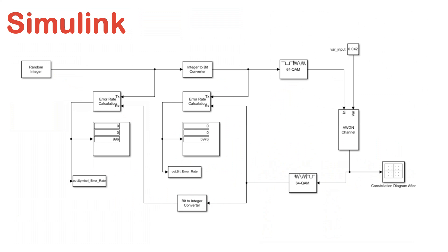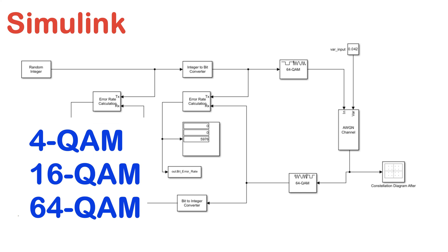Next, we modulate the bits using the QAM modulator block. QAM modulation involves encoding multiple bits into a single symbol. We can use different orders of QAM, such as 4-QAM, 16-QAM, or 64-QAM. The choice of modulation order determines the number of symbols that will be used.